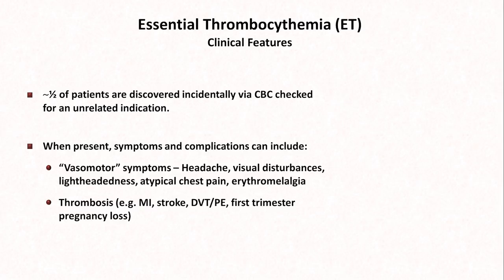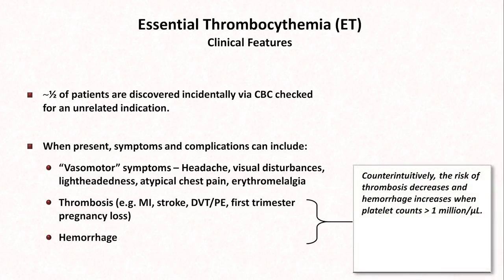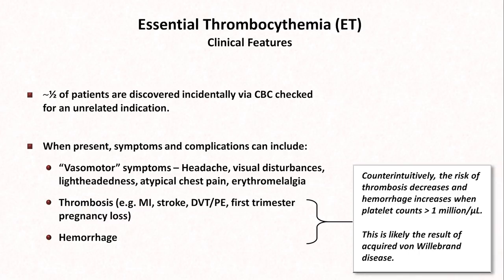Unexpectedly, ET is also associated with an increased risk of a variety of hemorrhages. Also counterintuitively, the risk of thrombosis decreases and hemorrhage increases when the platelet count exceeds one million. This appears to be the result of those patients developing an acquired form of von Willebrand disease, which is related to qualitative platelet disorders that will be covered in the next video.